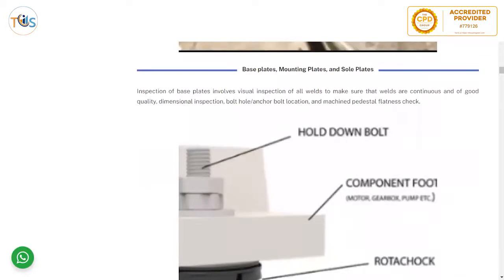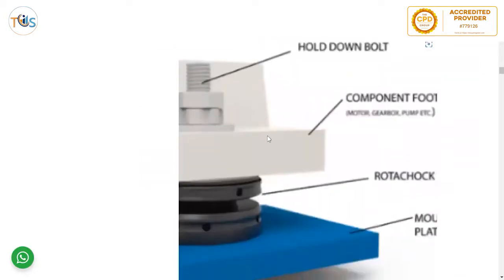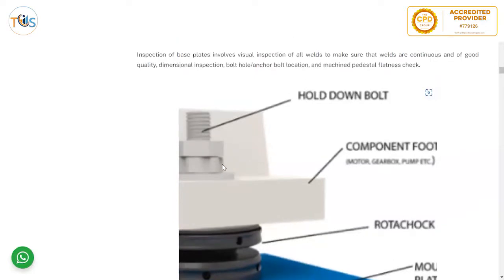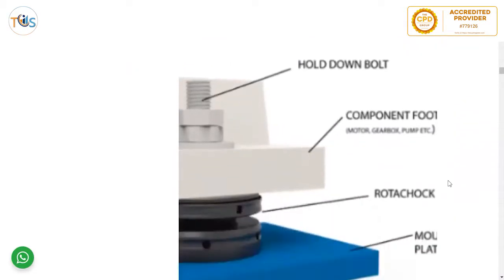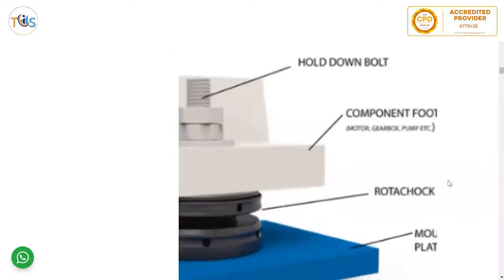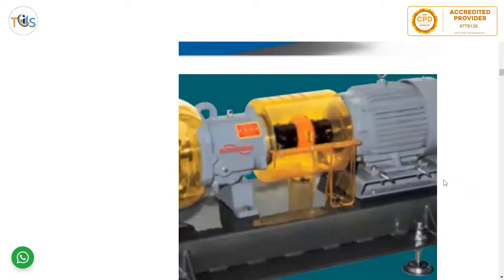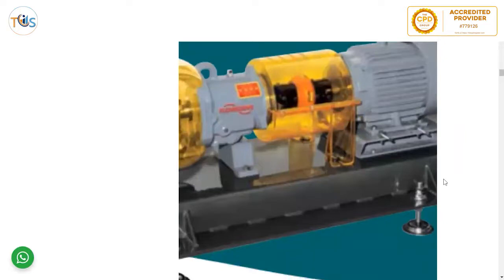Base plate, mounting plates, and sole plates — inspection of the base plate involves visual inspection of all welds to make sure welds are continuous and of good quality, dimensional inspection, bolt hole and anchor bolt location, and machine pedestal flatness check.